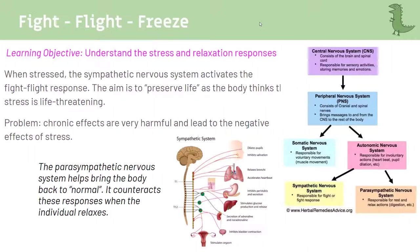Our nervous system is organized into the central nervous system (brain and spinal cord) and the peripheral nervous system (arms, legs, outside). The peripheral nervous system splits into somatic and autonomic, and the autonomic splits into sympathetic and parasympathetic. When it comes to stress, we're mainly talking about the sympathetic part — the sympathetic nervous system is what initiates the body's stress response.